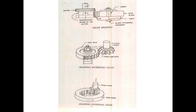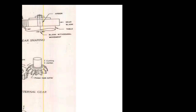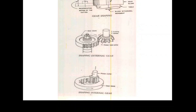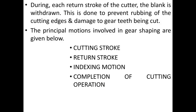The gear shaping process is shown in three diagrams. The second diagram shows shaping of an external gear and the third diagram shows shaping of an internal gear. During each return stroke of the cutter, the blank is withdrawn to prevent rubbing of the cutting edges and damage to the gear teeth being cut.